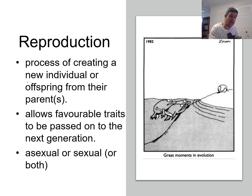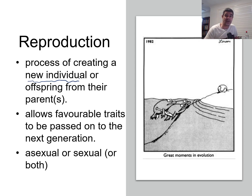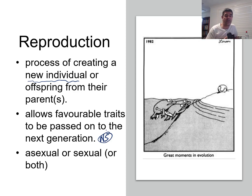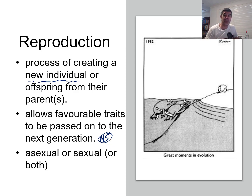Reproduction is the process of creating new individuals from their parents. There may be more than one parent, and also more than one offspring, depending on the strategies employed by different organisms. The key, as far as natural selection is concerned, is that ability of favourable traits to be passed onto the next generation, which changes the proportion of those genes within the gene pool.